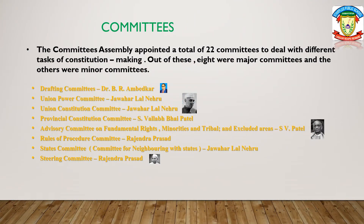The Constituent Assembly appointed a total of 22 committees to deal with different tasks of constitution making. Out of these, eight were major committees and others were minor committees. The major committees included the Drafting Committee, Union Power Committee, Union Constitution Committee, Provincial Constitution Committee, Advisory Committee on Fundamental Rights, minorities and tribal and excluded areas, Rules of Procedure Committee, States Committee, and Steering Committee.